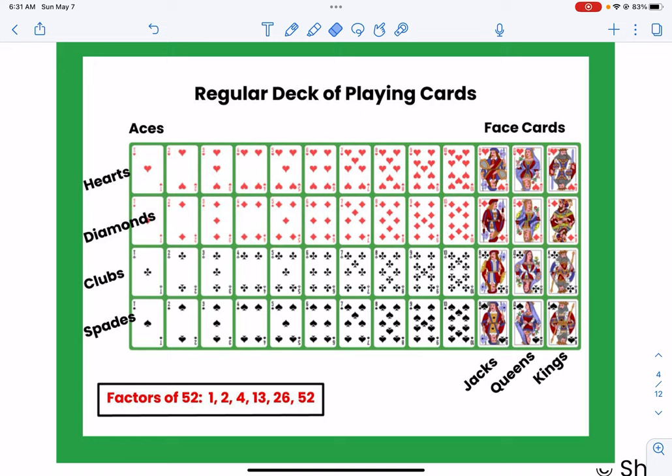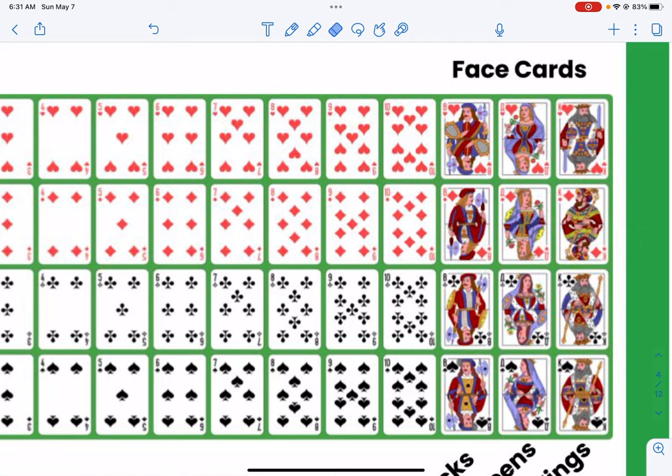They're called face cards because they have faces on them. They're the faces of the jacks, the queens, and the kings. Now you get lots of decks of cards that have some interesting things. If you notice some of the jacks have one eye and some of them have two, so if you're ever watching a movie and they say one-eyed jacks are wild that's why, because if you look like right here you can see that this one he only has one eye because he's turned to the side.